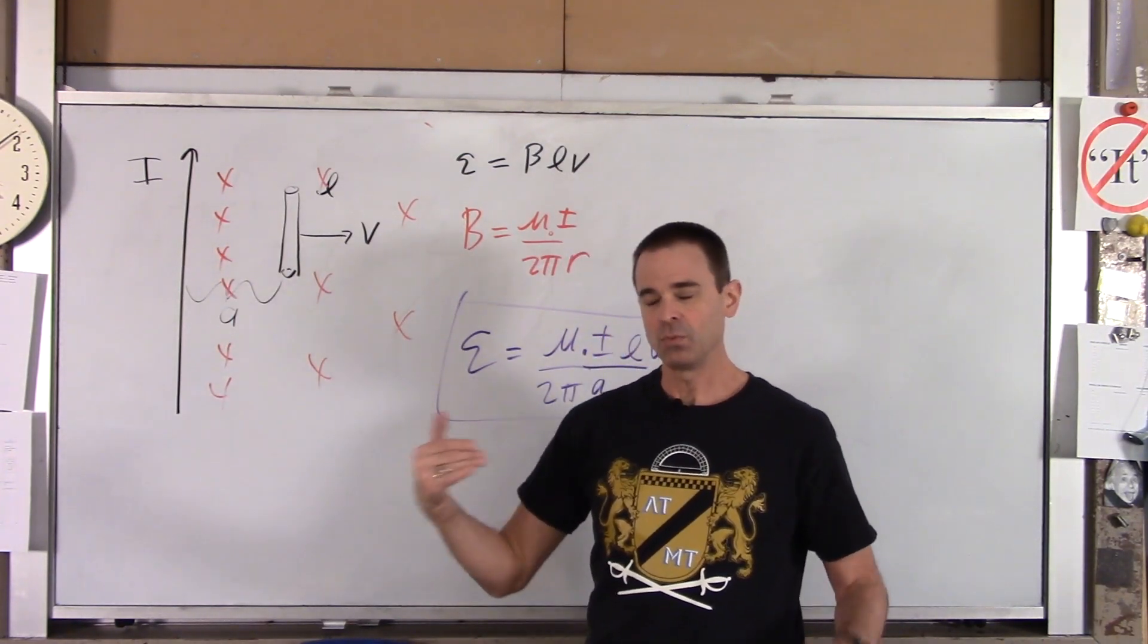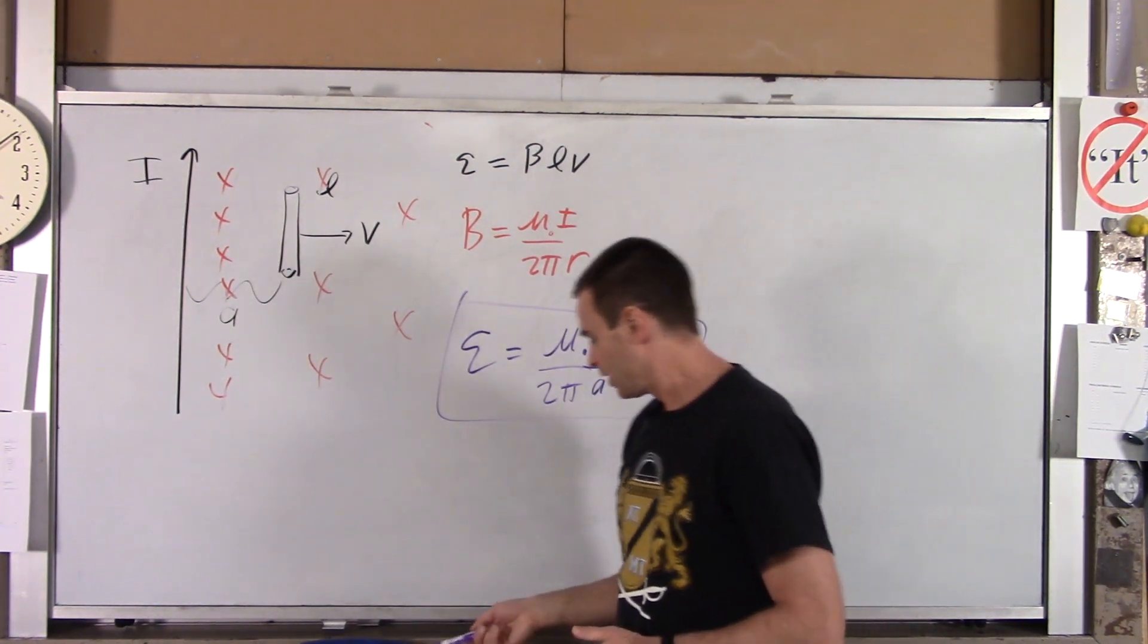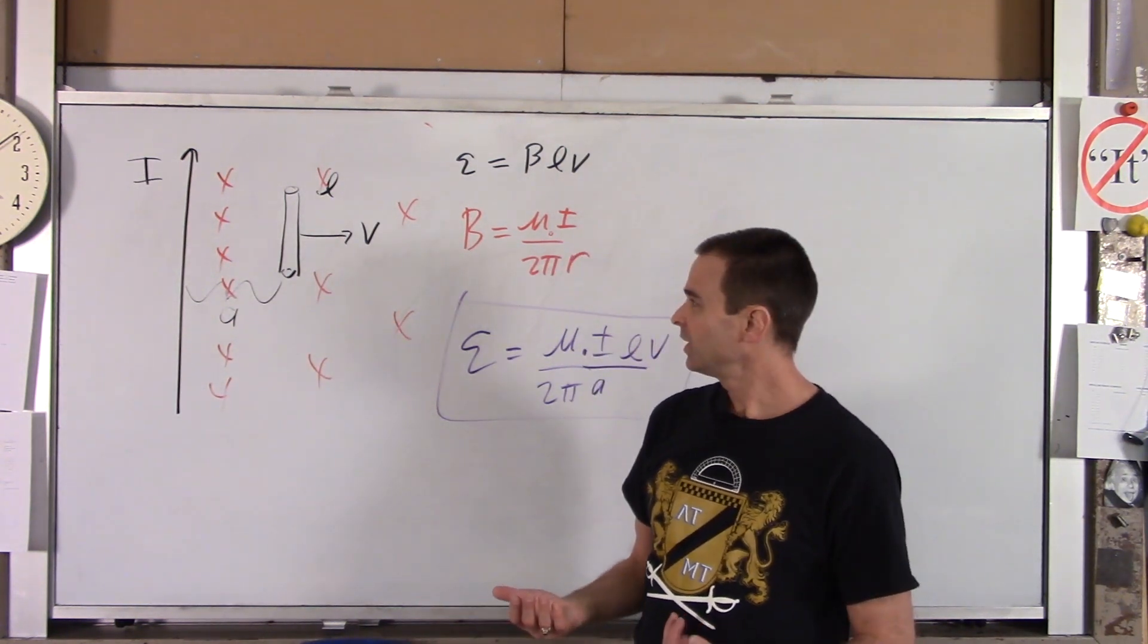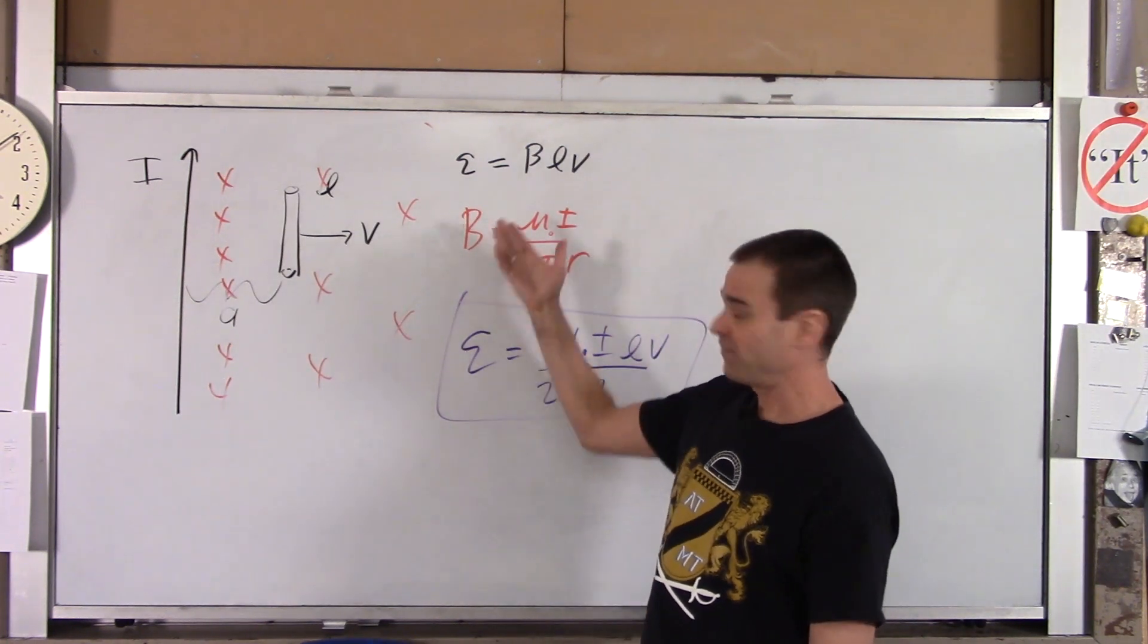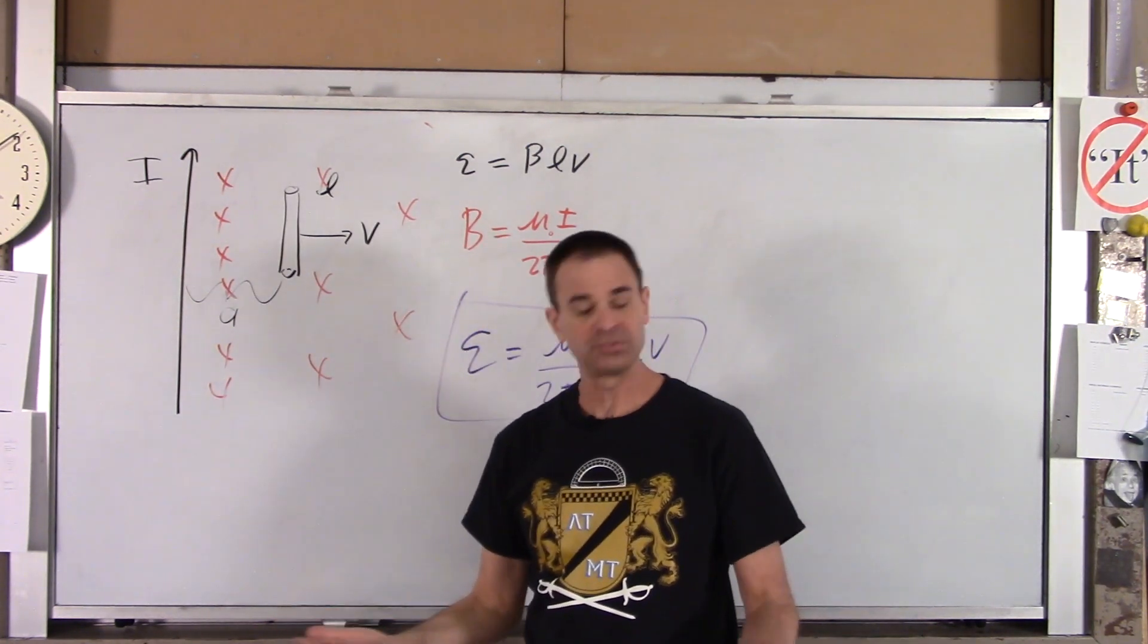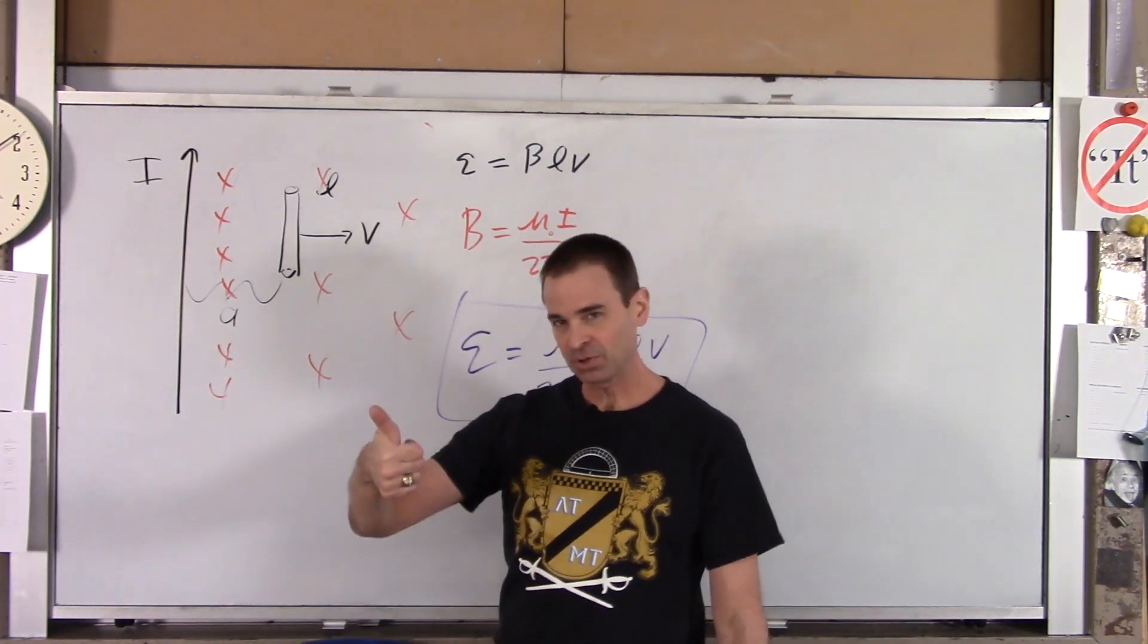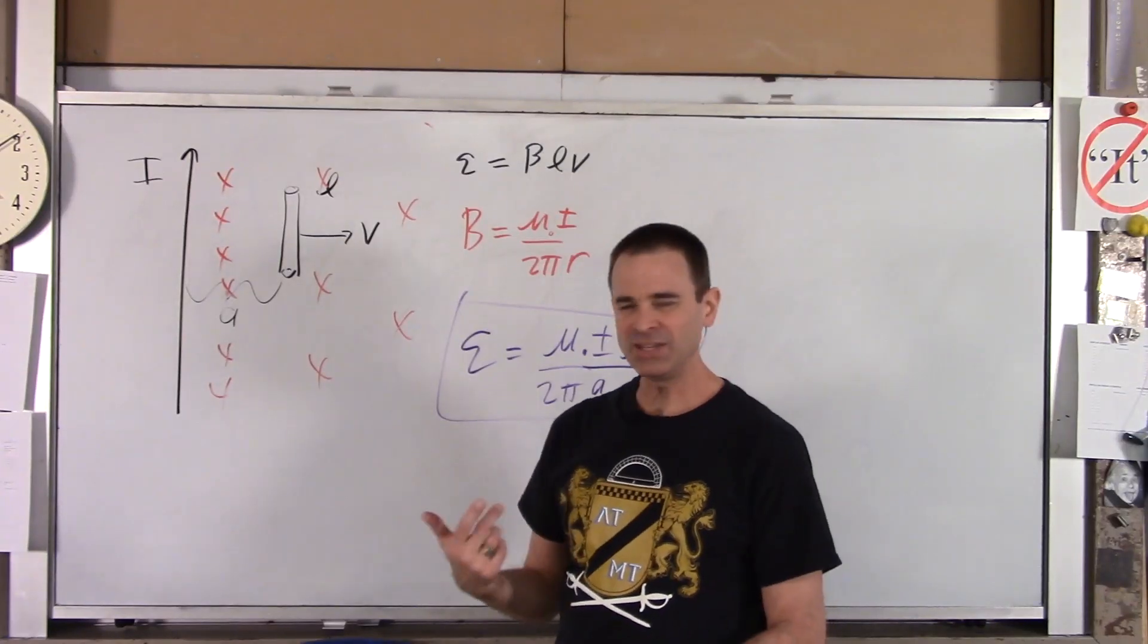Now the only other question is, which end of that wire is at the higher voltage, higher potential? So one way I kind of explain this is I want you to imagine that this is a little moving battery. That's what EMF is. It's a voltage. One other example is a battery. So imagine it's a moving battery. Which end of that battery is the plus terminal? And which end of that battery is the minus terminal? Well, that's pretty easy to do.